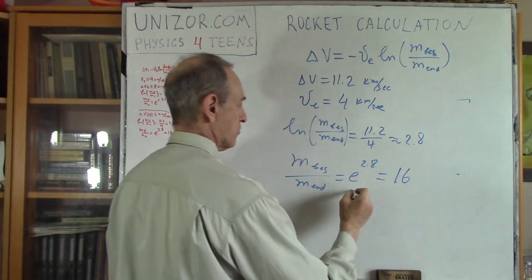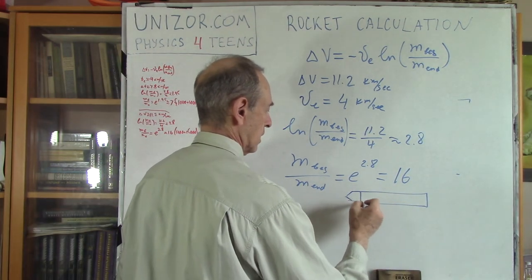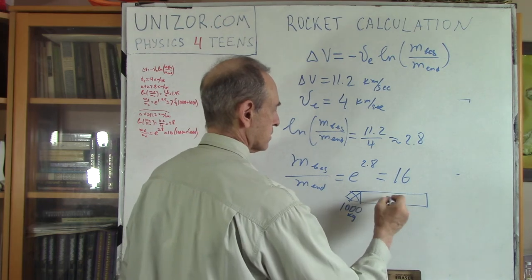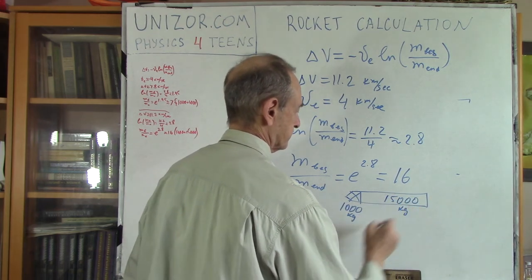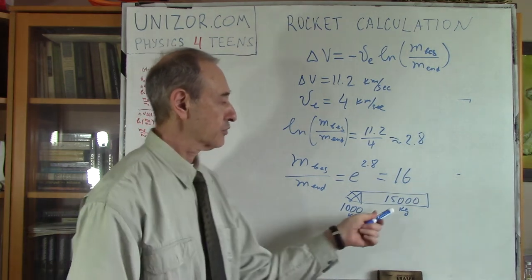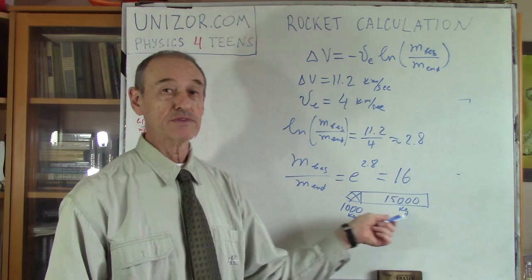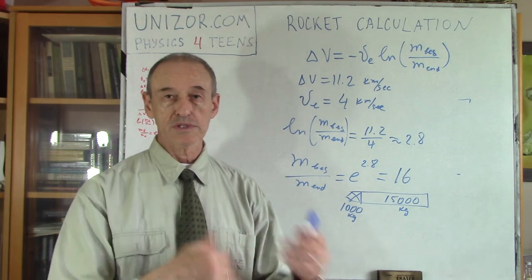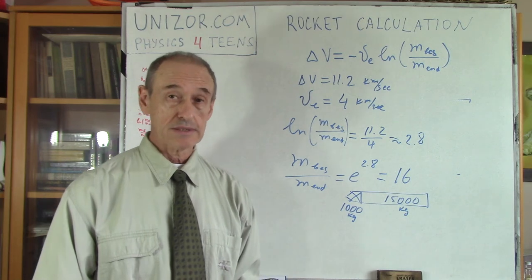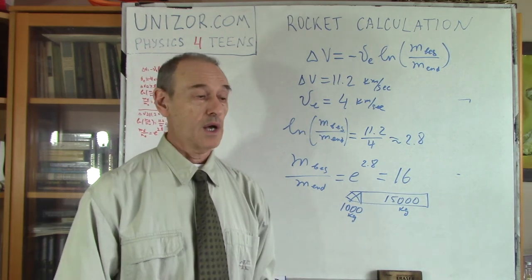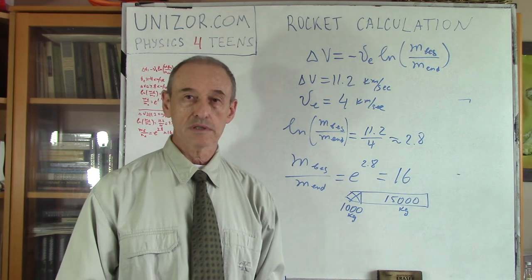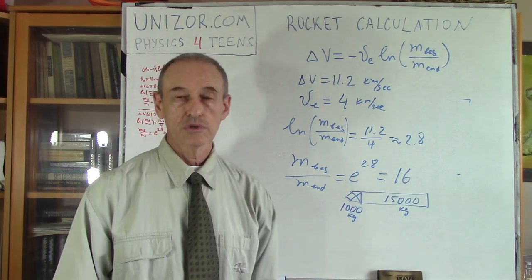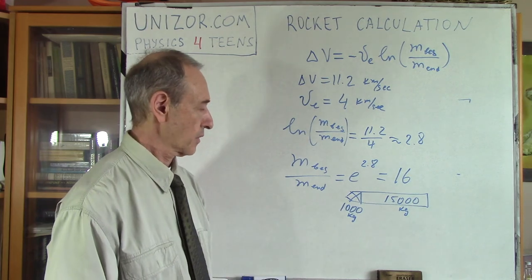So again, the same picture. This is the rocket. This is the useful part. Let's say this is 1,000 kilogram. Now this should be 15,000 kilogram. So you have to have 15 times more weight of the fuel relative to the useful weight of the rocket with all its equipment and maybe people, I don't know. But in any case, that's how much fuel you need. And that's the problem, obviously. I mean, it's not such an easy thing to have 15 tons of fuel to launch one ton of useful weight.